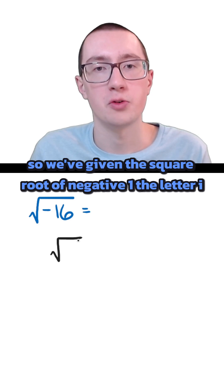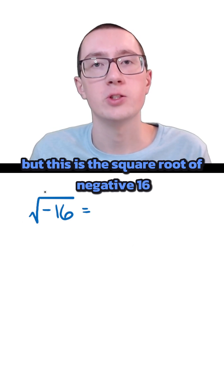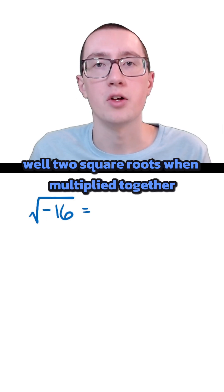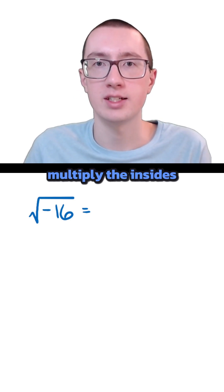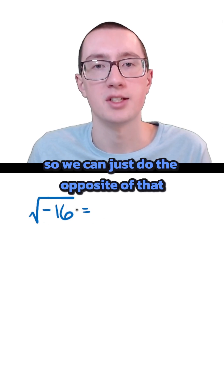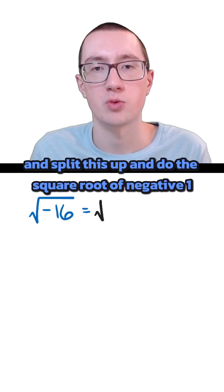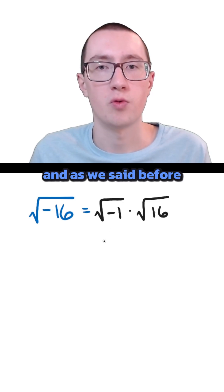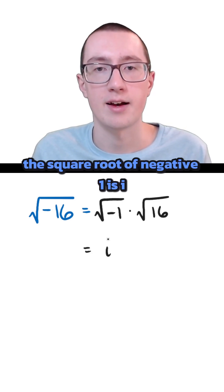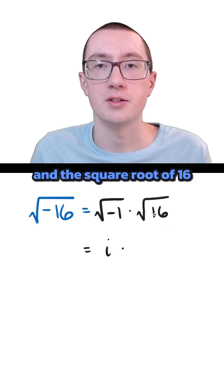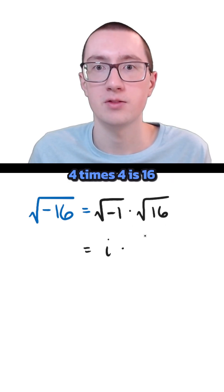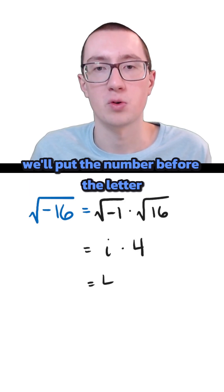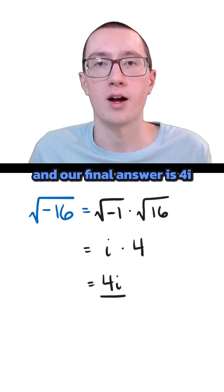We've given the square root of negative 1 the letter i. So for the square root of negative 16, we need to get i out of this. Two square roots multiplied together multiply the insides, so we can split this up and write it as the square root of negative 1 times the square root of 16. The square root of negative 1 is i, and the square root of 16 is 4, since 4 times 4 is 16. Putting the number before the letter, our final answer is 4i.